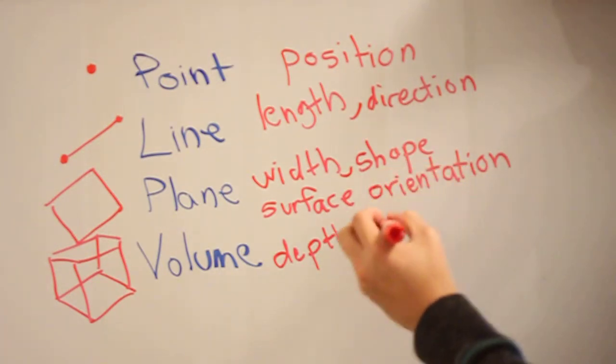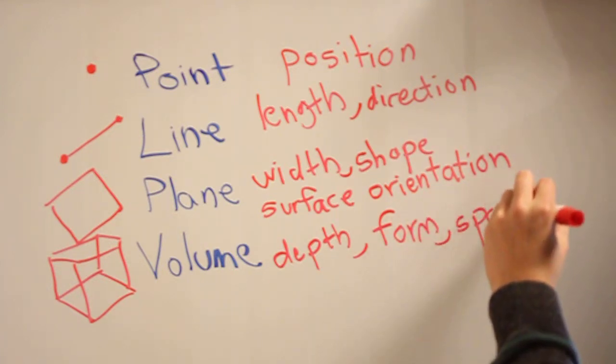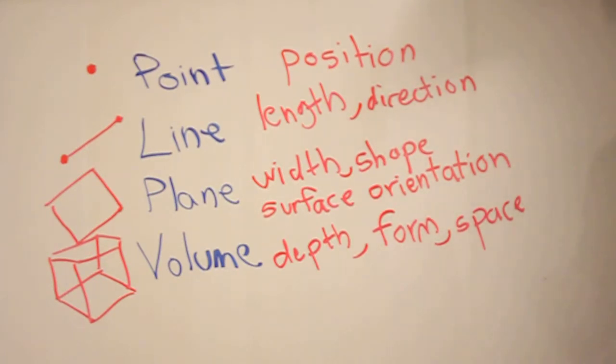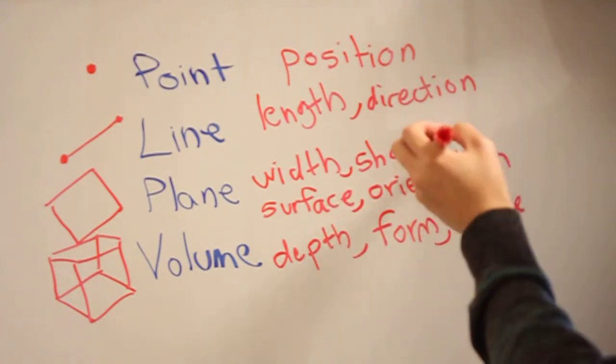You have form and space, which are probably the most important in terms of architectural study, which we'll get to in future videos. You have surface, orientation, and position.